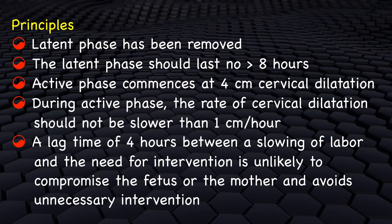WHO partograph has following modified features. Latent phase has been removed. The latent phase should last no longer than eight hours. Active phase commences at four centimeters cervical dilatation. During active phase, the rate of cervical dilatation should not be slower than one centimeter per hour. A lag time of four hours between a slowing of labor and the need for intervention is unlikely to compromise the fetus or the mother and avoids unnecessary interventions such as cesarean section.